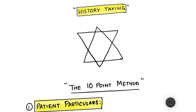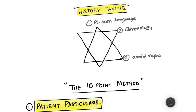Now, keeping history taking in mind, there are seven golden rules. First, always write the history in the patient's own language — no medical words should be used. Second, write the history in a chronological fashion, which we will discuss later. Third, avoid repetitions — avoid repeating symptoms or descriptions. Fourth, avoid leading questions — don't ask 'do you feel like vomiting?' or 'do you feel a headache?' because patients mostly answer yes and that will mislead you.